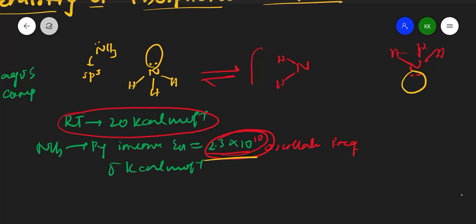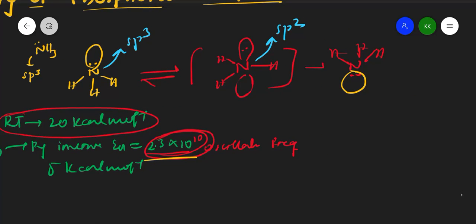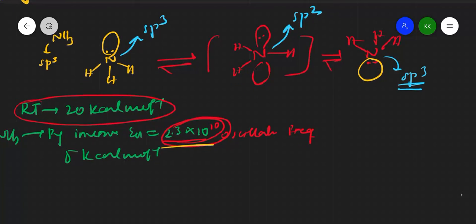In nitrogen's hybridization, it is SP3 in both ground states, but through a transition state it becomes SP2 and planar. Because of this planar transition state, the molecule becomes optically inactive. This is what we call pyramidal inversion — going SP3 → SP2 → SP3.